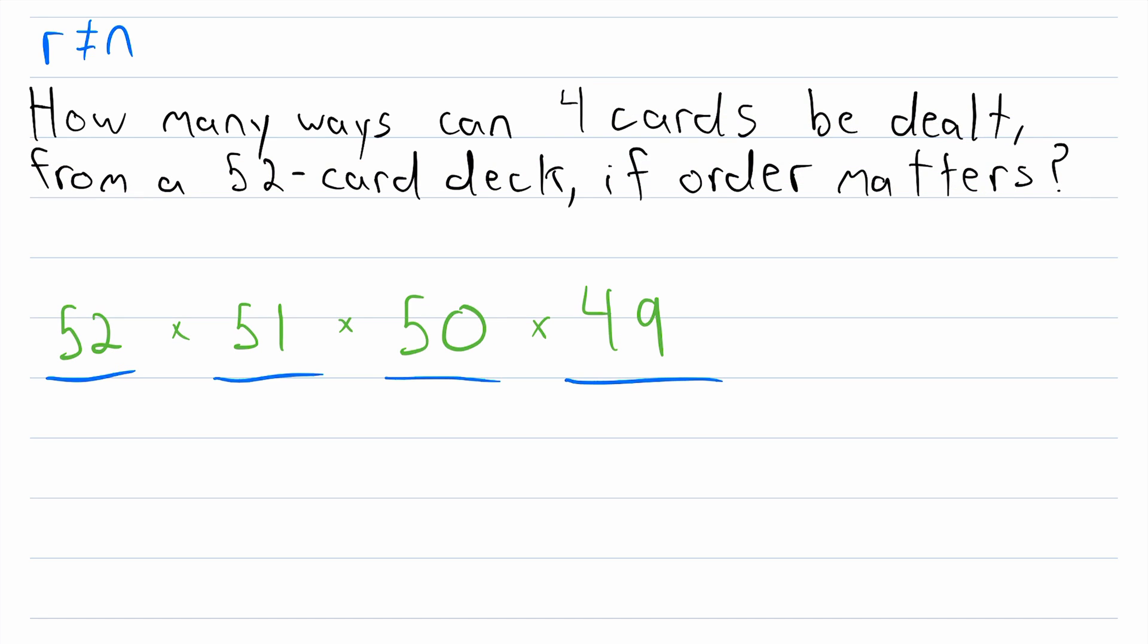So this is the number of ways that four cards can be dealt from a 52-card deck if order matters. And just to make it clear, I'll point out up here, in this case, n is equal to 52. That's the size of the collection of objects, the 52 cards, and r is equal to four. This is the number of objects from the collection that we are ordering.